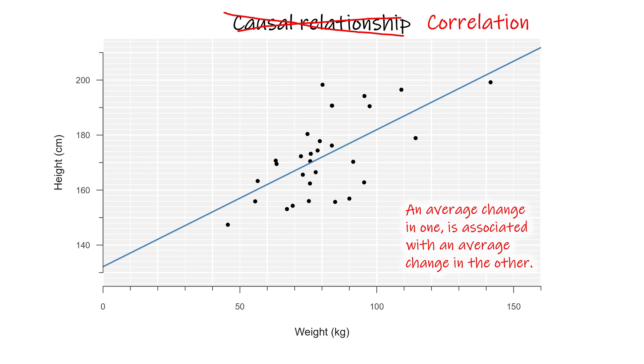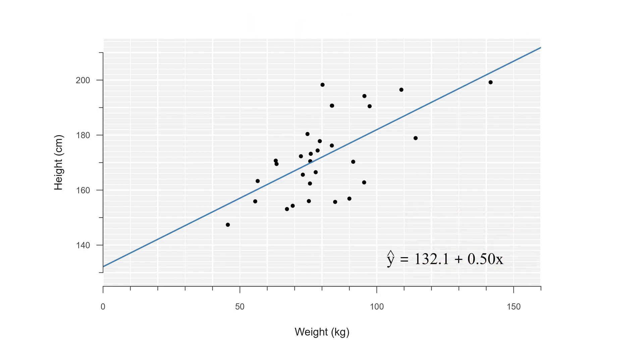But this is just observational data, so all we have is a correlation. Also, a linear relationship may be a reasonable approximation within the range of these data, but this line doesn't stop anywhere.